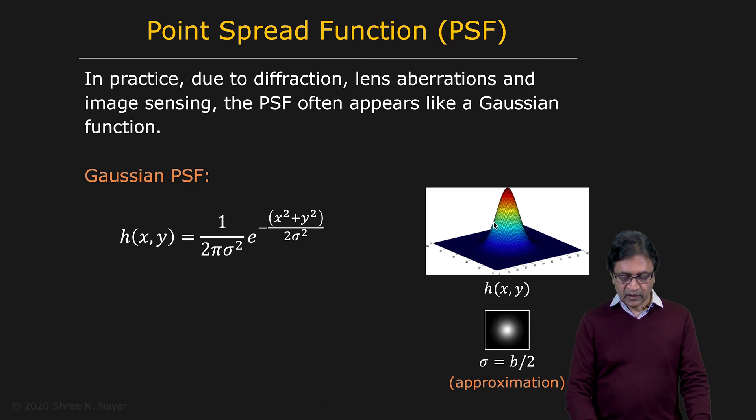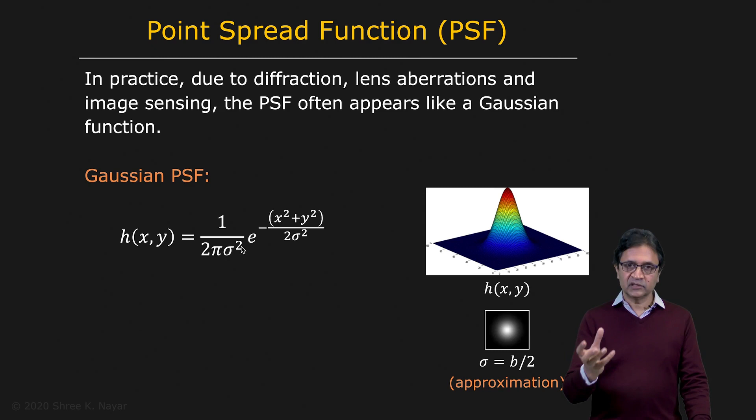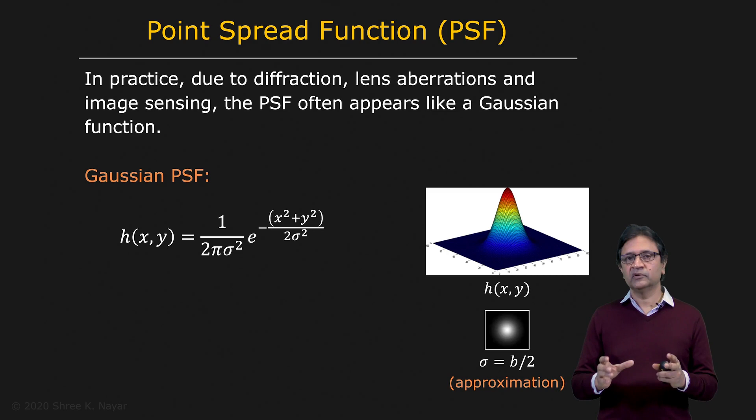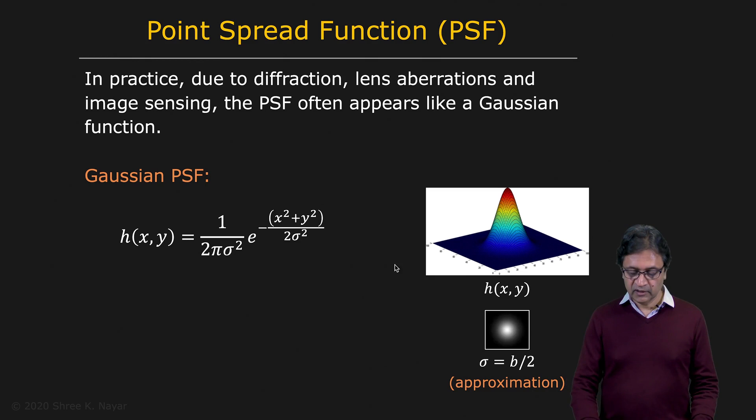The point spread function is very often assumed to be a Gaussian. It has a peak at the center and a normalization constant which guarantees that the light received by the lens equals the light that falls within the blur circle. As a rule of thumb, if you want to relate the sigma of your Gaussian to the diameter of the blur circle b, we can say sigma is roughly equal to b divided by 2.